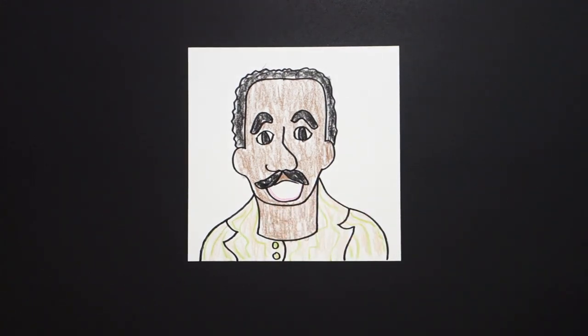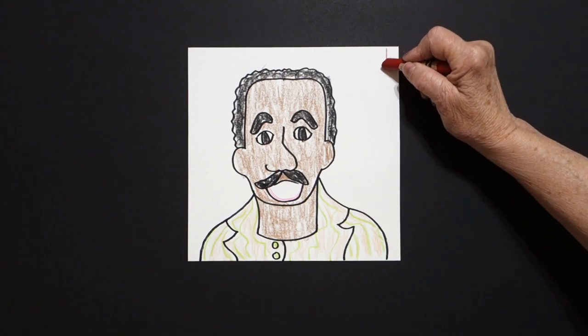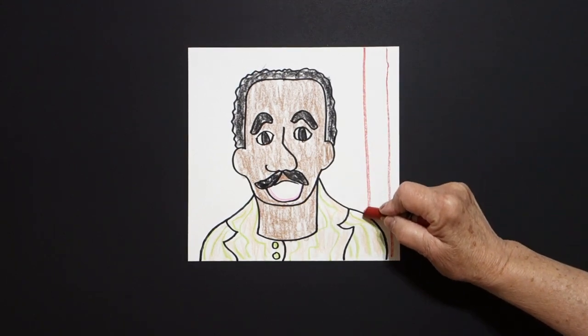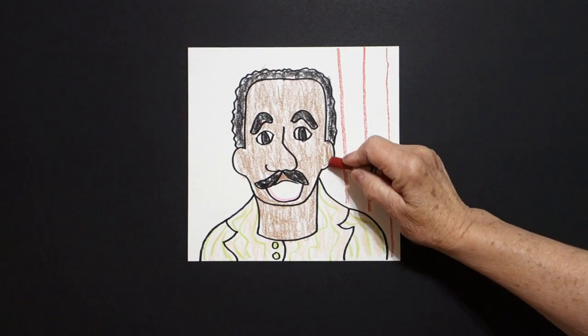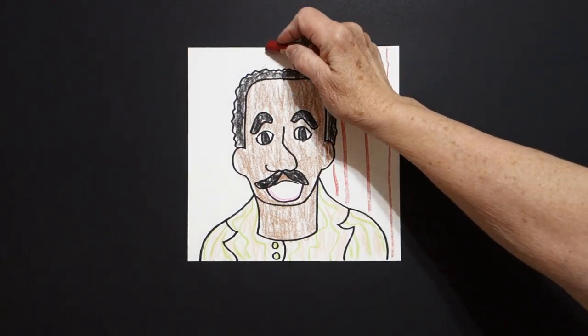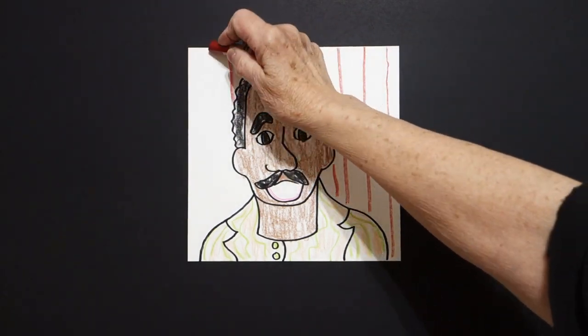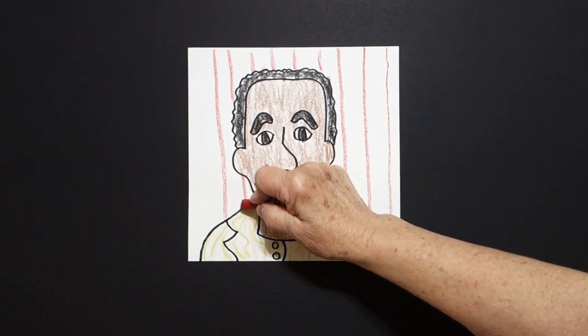Then, as always, I took my red, and I drew red straight lines for the background, because that kind of punched up the whole look of the portrait.